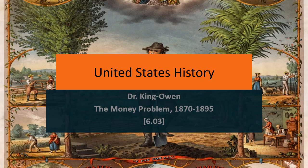Welcome to this United States History Lecture on money. We're actually going to look at the money problem between 1870 and 1895, because you have to understand it in order to understand the Populist Party movement, which is going to be our next lecture.